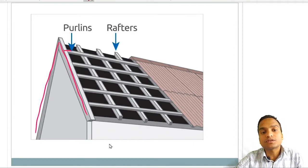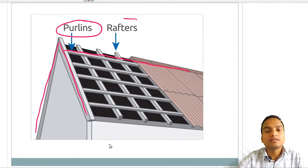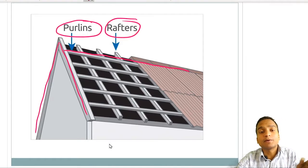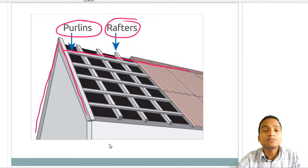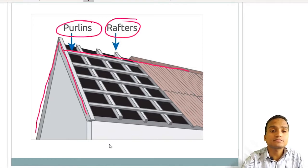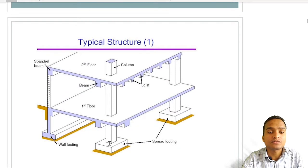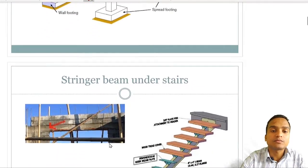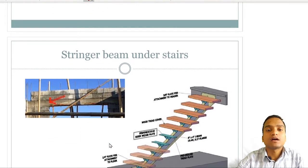Consecutive trusses are connected by a longitudinal beam called a purlin. Rafters are parallel to the trusses but purlins run perpendicular to the trusses. In a common RCC structure, beams and joists are visible, along with columns and the spandrel beam at the outermost side. Wall footings and spread footings are also shown.